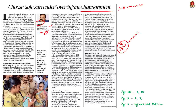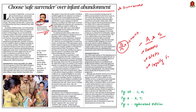In today's discussion we are going to learn about the major difference between abandonment and surrender of a child, the reasons for abandonment of a child, steps taken to avoid such abandonment, and the procedure for declaring a child legally free for adoption. And finally, let us see some points about the Central Adoption Resource Agency.